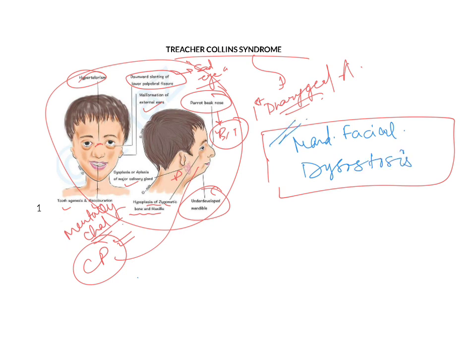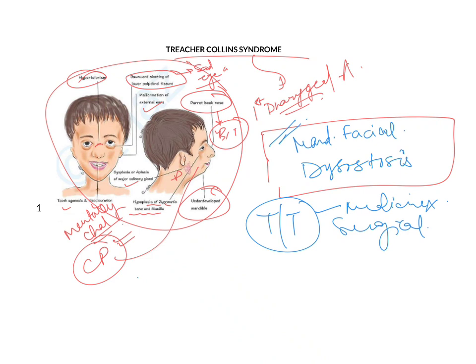Coming to the treatment of this condition: there is no medicine as such, but the whole treatment is surgical. For example, in parrot beak nose, you can remove the excess tissue and bone so that the normal architecture of the nose is achieved and breathing is not hampered.